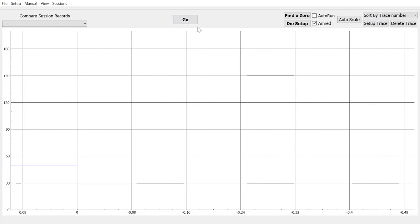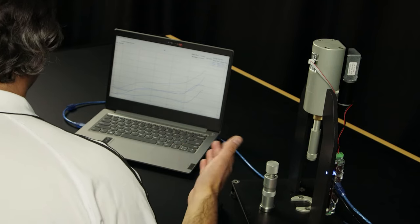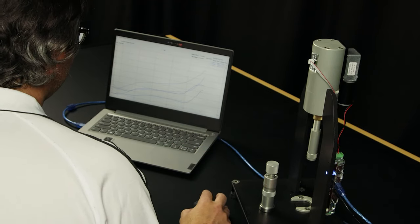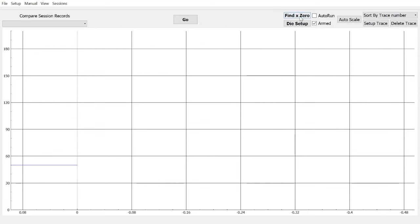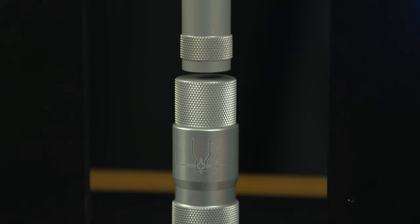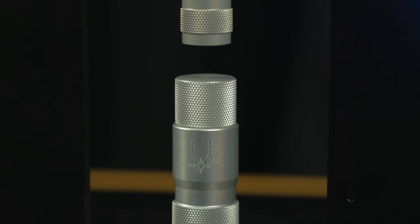To the right of that, we've got the go button. That tells the RAM to basically do a cycle and record a plot. To the right of that, we've got Find X0. That determines the x-axis area that we're working with, the distance from the top of the RAM to the bottomed out die.